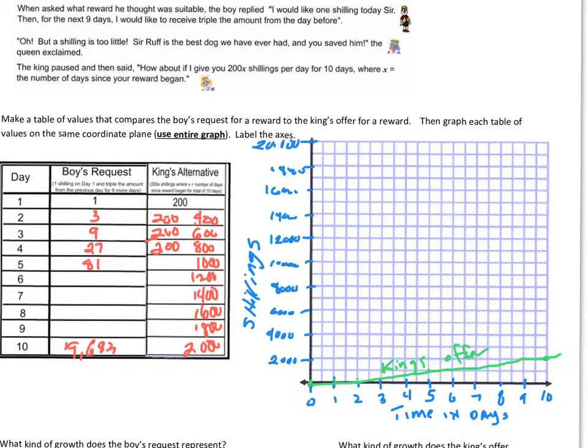Alright, let's use red for the boy's request. He says, I want 1 and then 3 dollars for day 2. It hardly shows up here. You know, we've got 9 dollars for day 2. We've got 27 at 3. We've got 81 at 4.